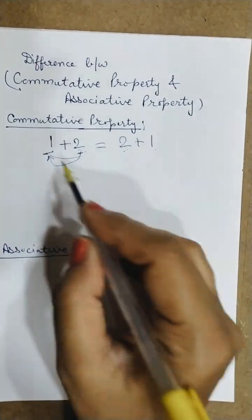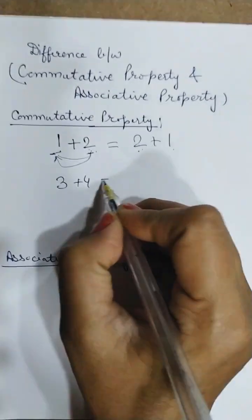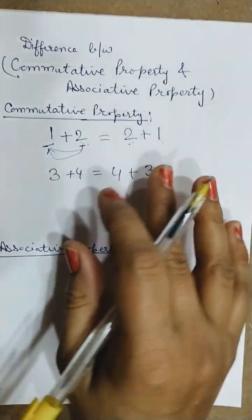So that is called commutative property, when their seats are changed. For example, 3 plus 4 equals 4 plus 3. Now their places are changed.